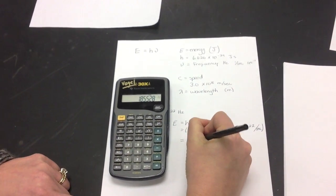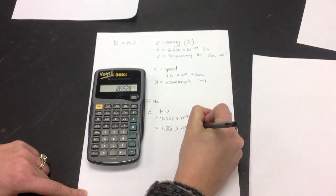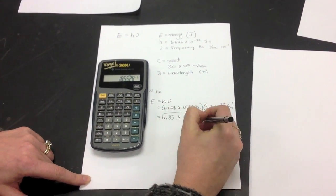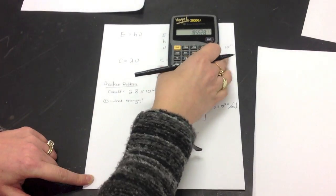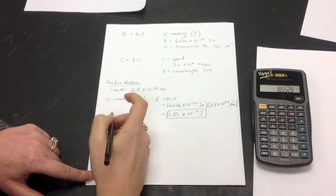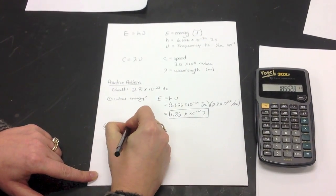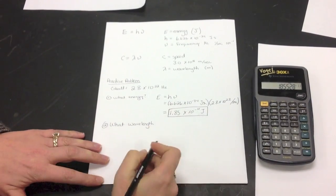And what I end up with is 1.85 times 10 to the negative 11 joules. That is the answer for how much energy that wavelength has, that frequency has. Now, my second question might be, what is the wavelength of this?